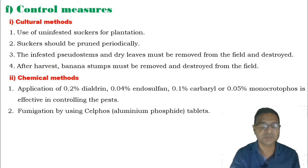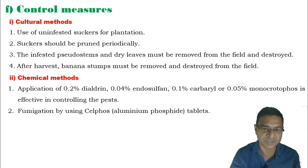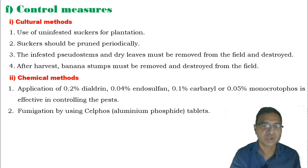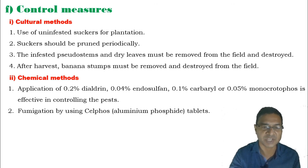For chemical methods, as the pest population increases, application of 0.2% dieldrin, 0.4% endosulfan, 0.1% carbaryl, or 0.05% monocrotophos is effective in controlling the pest. Fumigation using celphos tablets containing aluminum phosphide as the main ingredient is also effective.